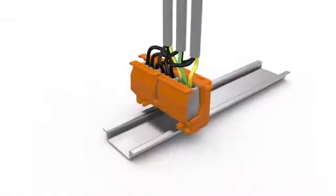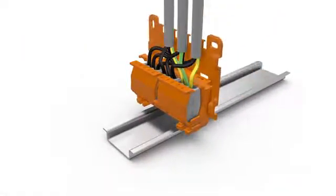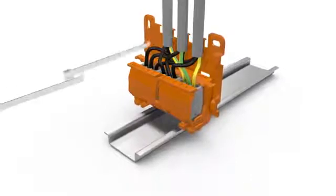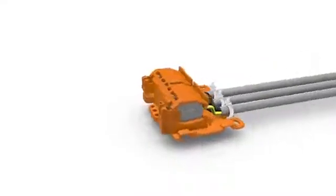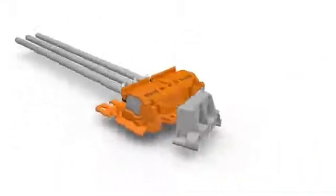The snap-on strain relief plate enables securing of round cables using cable ties. The universal angle adapter enables horizontal assembly on the carrier rail.